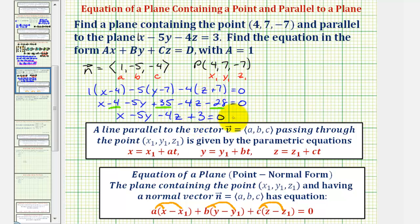We want the constant to be on the right side, so we'll subtract 3 on both sides of the equation, which would give us x - 5y - 4z = -3.